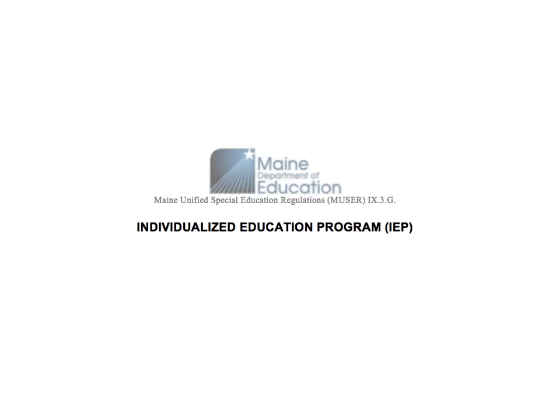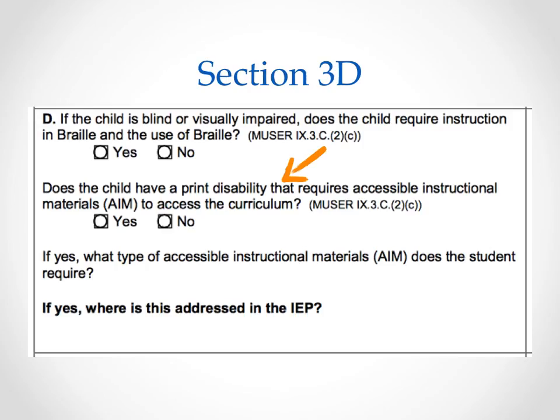If you're an educator in Maine, you may have noticed that the state's IEP form makes reference to AIM. In Section 3, Part D, there's a question that reads: Does the child have a print disability that requires AIM to access the curriculum? Followed by: if yes, what type of AIM does the student require?